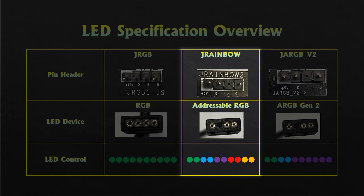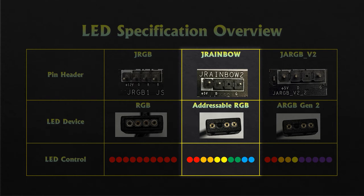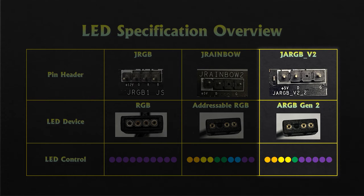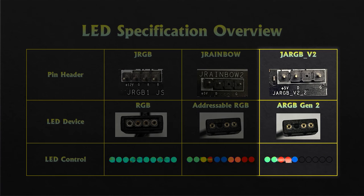ARGB devices, also known as addressable RGB, can control each LED bead on the strip to display a different color at the same time. As for ARGB V2 devices, each bead is seen as a single LED device — you can not only apply different colors but also different LED styles to each bead.